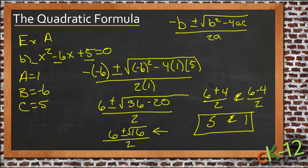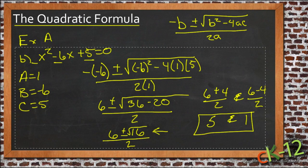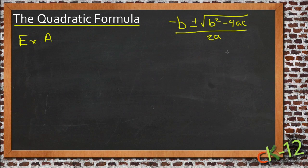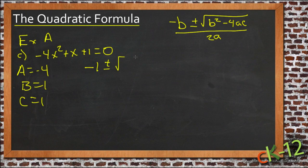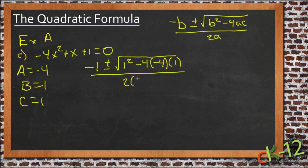So let's really quickly see if we can get through example C as well. Give you a little bit more to practice with. C would be negative 4x squared plus x plus 1 equals 0. So here our a is negative 4, our b is 1, and our c is also 1.